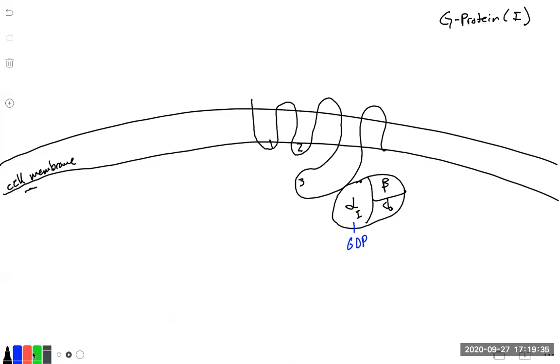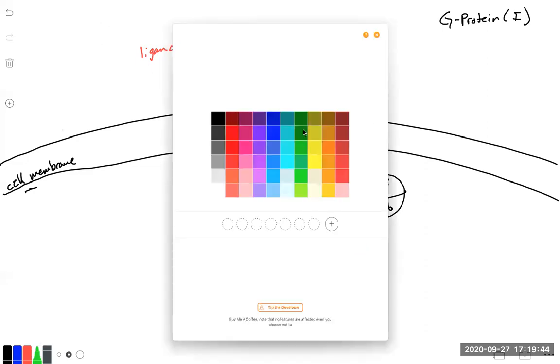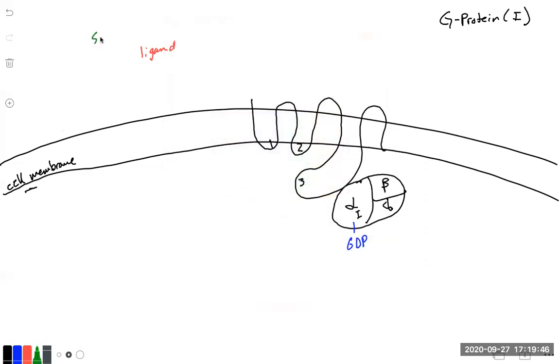So just like in our previous example, a ligand has to start. This is our start point. So our ligand is released from other cells and is floating around and it's going to activate our G-protein coupled receptor, in this case, the inhibitory G-protein coupled receptor.